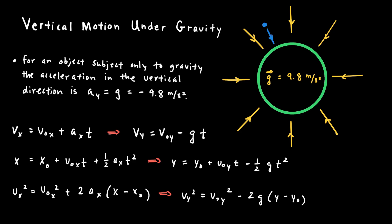That gravitational field always points toward the center of the Earth. For near the surface of the Earth, it has a strength of about 9.8 meters per second squared. What that means is, if I take a mass and let go of it near the surface of the Earth, it will accelerate downward at 9.8 meters per second squared. So anytime we're working a problem where an object is moving in the vertical direction, the acceleration in that y direction is 9.8 meters per second squared in magnitude.